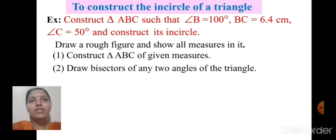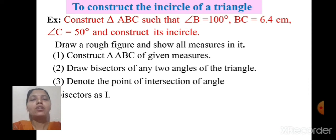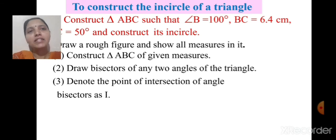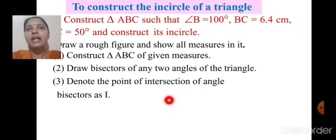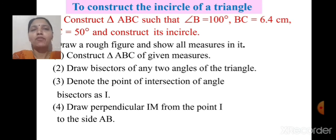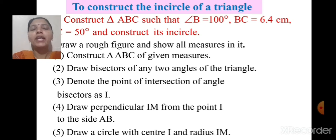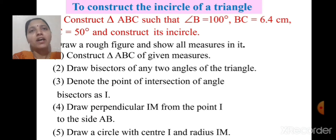Second step is draw bisectors of any two angles of the triangle. Denote the point of intersection of the angle bisectors as I, because I stands for incenter. Draw perpendicular IM from point I on side AB, or you can draw it on any side of triangle ABC. Then the fifth step is draw a circle with center I and radius IM — that circle is called the incircle.